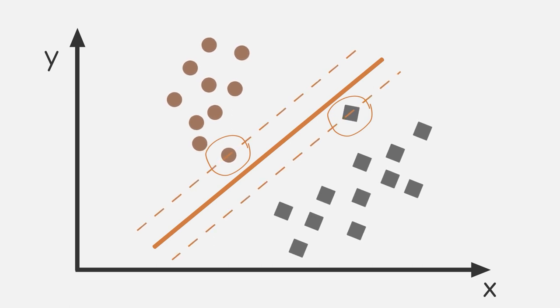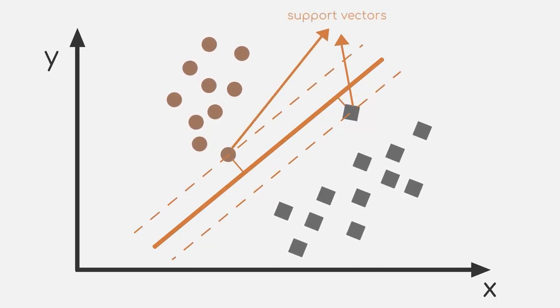The vectors pointing to those samples are now called support vectors. But what exactly do they support? Well, one could say they are supporting us to find a good decision boundary between squares and circles. Using those support vectors, the SVM forms a hyperplane to separate the support vectors.